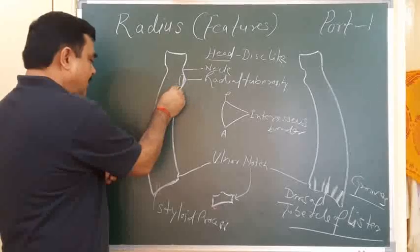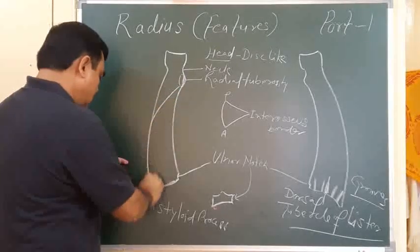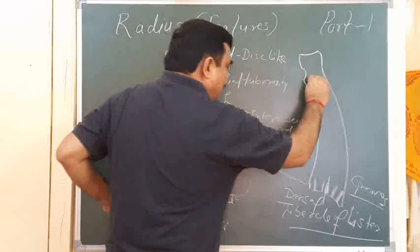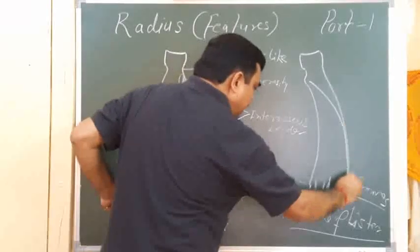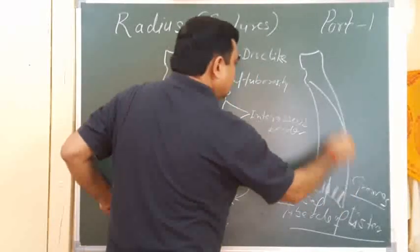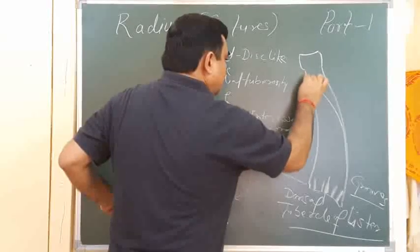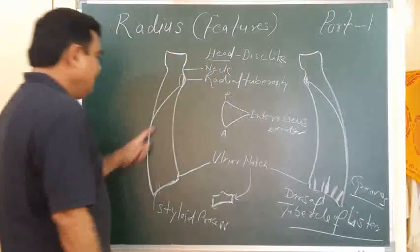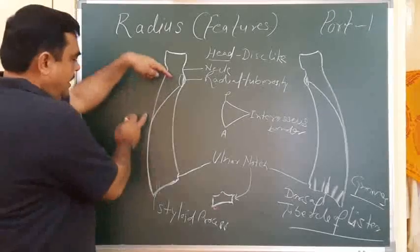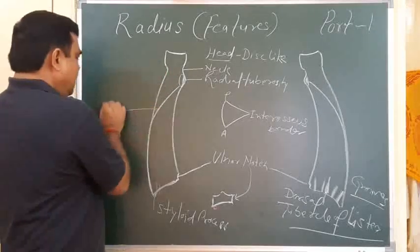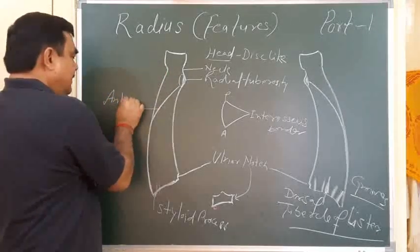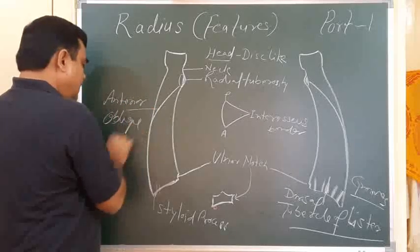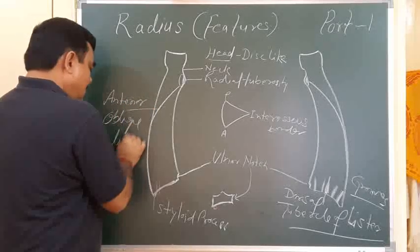This is the anterior border. Its mirror image is the posterior border. The upper part of the anterior border is oblique, known as the anterior oblique line.